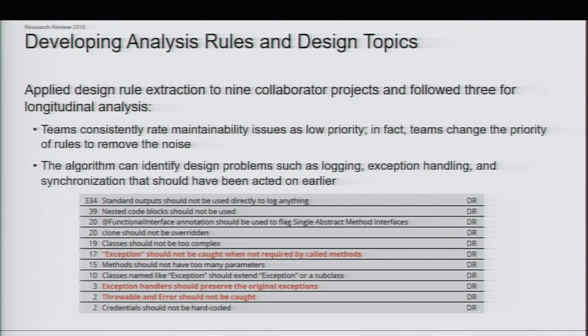We applied this to actual projects — nine projects across the board — and followed three of them throughout their iteration over a year and a half. As a result, the organizations started adapting some of these practices. One aha moment for us: when we talk about maintainability and sustainability costs, yes, they are important and they add to the overall cost of ownership. But if your software crashes today, that's not the priority. When you have to add a new feature, that's not the priority. If it's not changing often and you haven't heard any complaints from users, that's not the priority either.